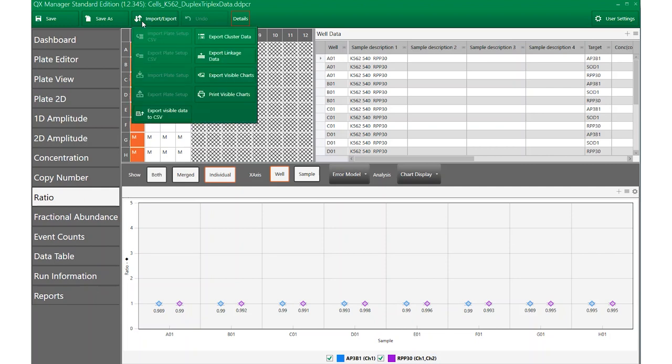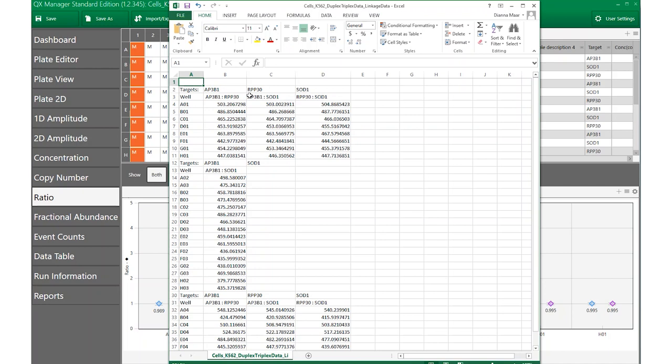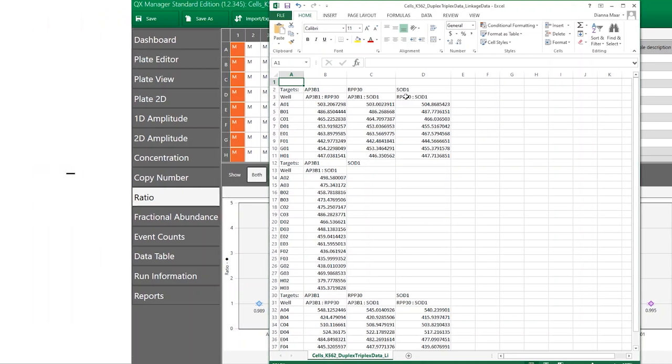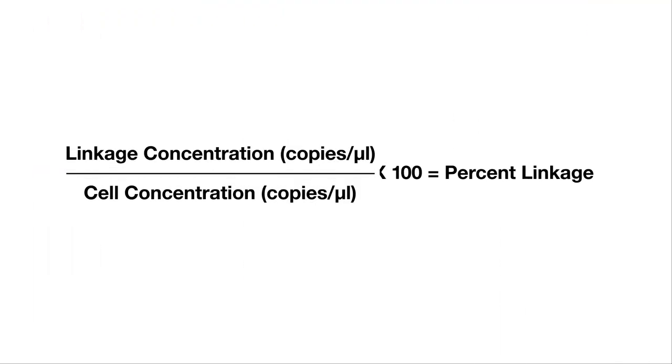These data can be found by clicking on the Import-Export button and then clicking on Export Linkage Data. The concentration number reported for each pairwise comparison is the number of cells per microliter that are positive for both reference assays. Always calculate the percent linkage of your control reactions, RPP30 and SOD1. This is an important control to ensure that the protocol was well executed. To calculate percent linkage, divide the linkage concentration in copies per microliter by the concentration also in copies per microliter and then multiply by 100.